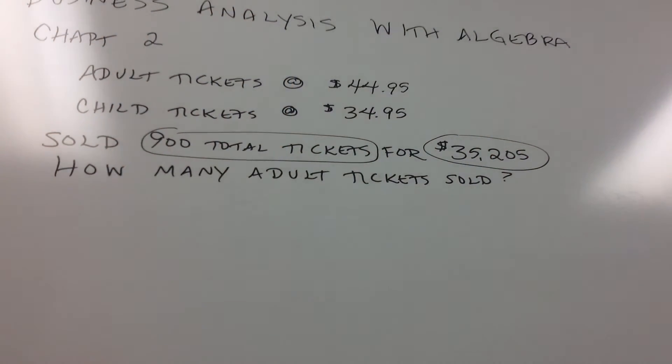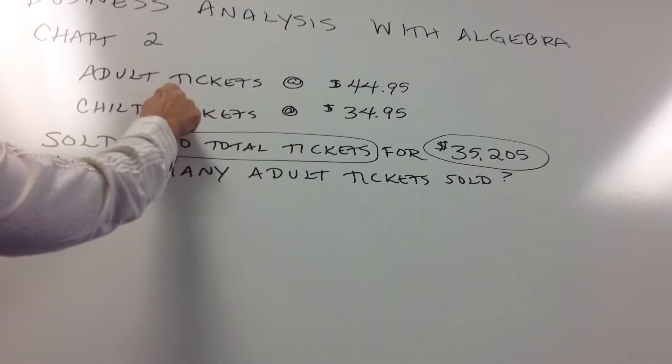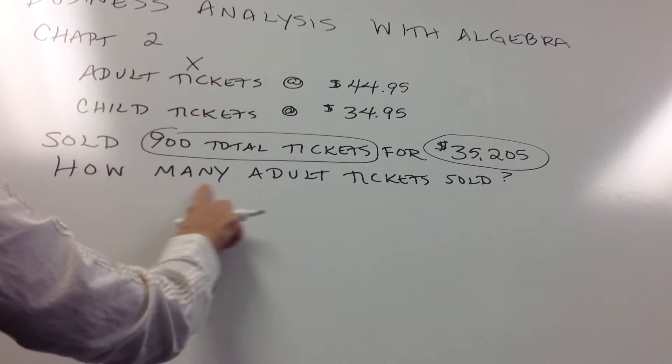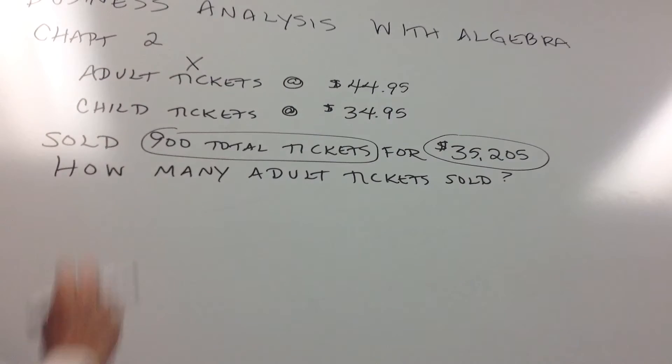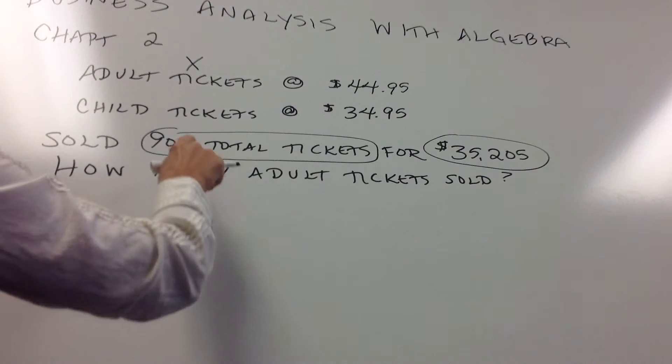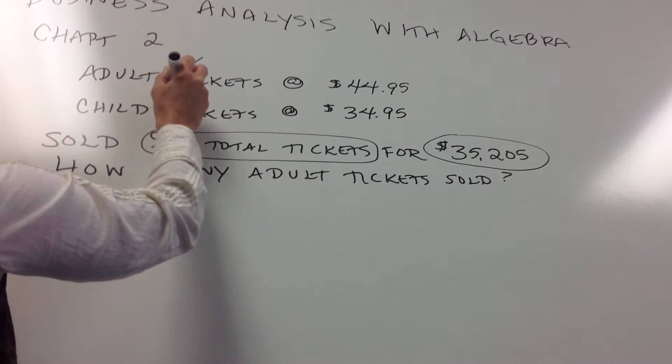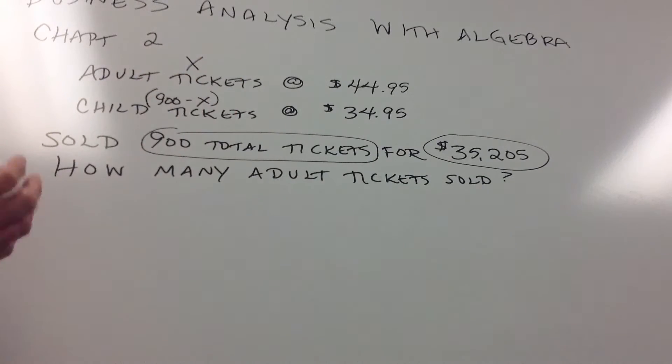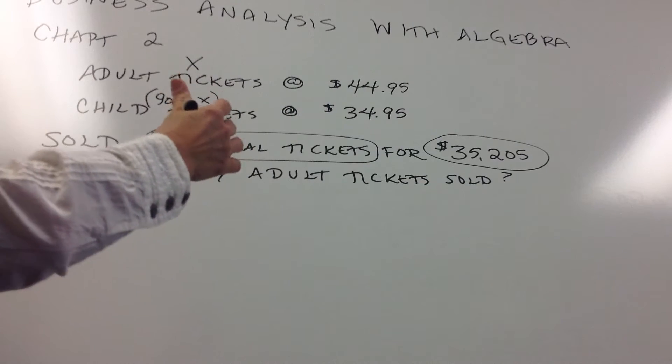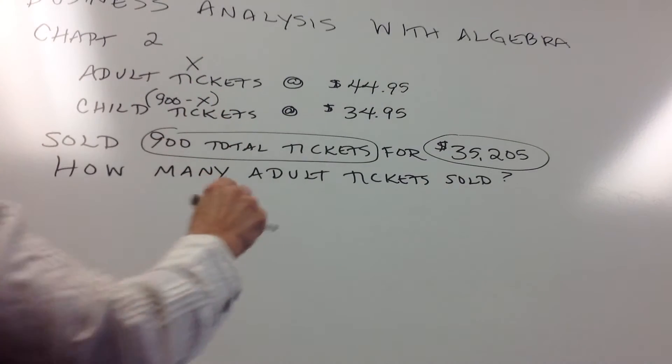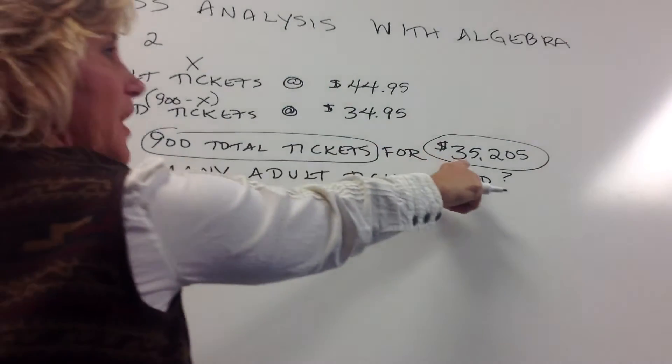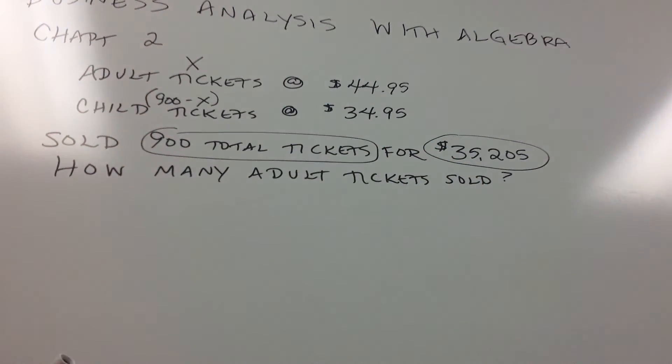So when we go to set that up as a formula, we'll map it out. Okay, coming back up here, if our adult tickets, we make that X, because that's what it's asking for, how many adult tickets are sold. So that can be our X. Our child tickets are going to be the difference, the total tickets minus X. So 900 total tickets minus X to figure out what total tickets were sold for that total price of $35,205.